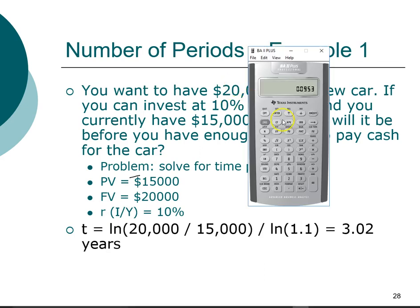If I'm using the calculator, I need to clear not just the numbers but also do a second function clear TVM. Twenty thousand dollars is our future value. Fifteen thousand dollars, remember that's an outflow, so we need to change the sign. Negative fifteen thousand dollars will be the present value.